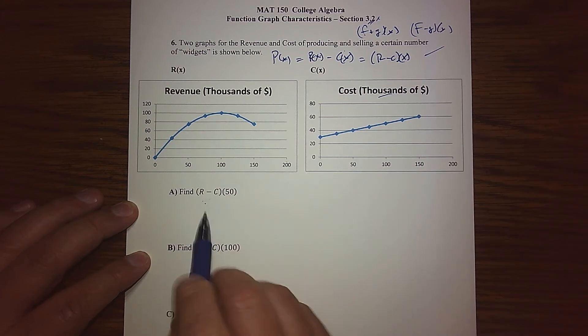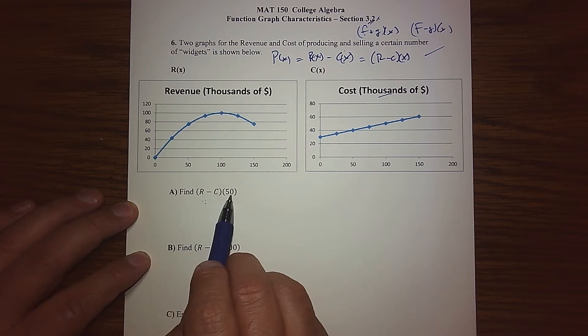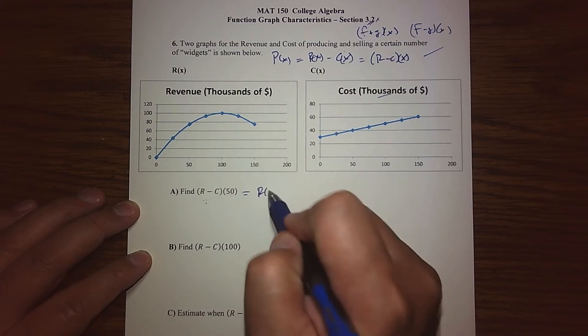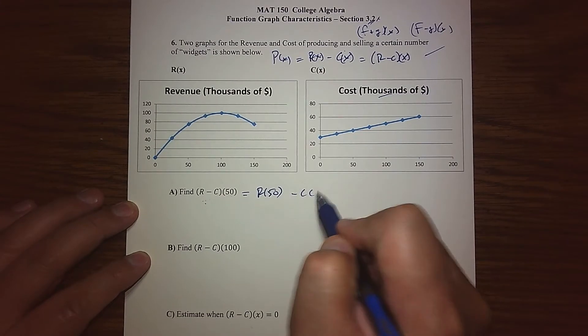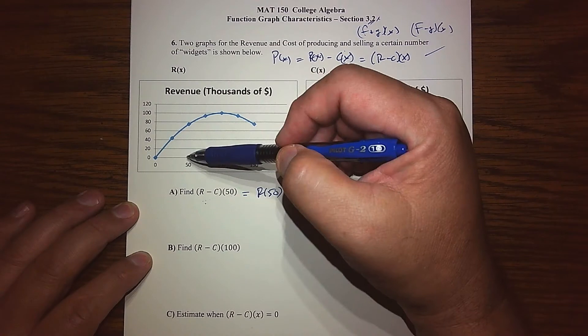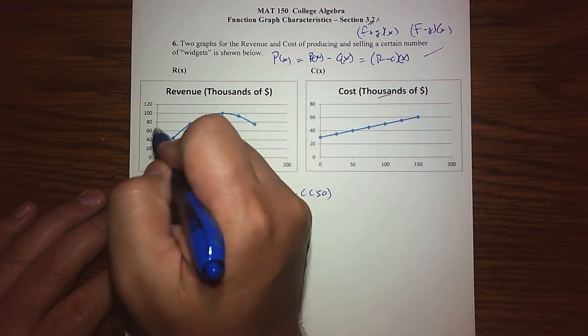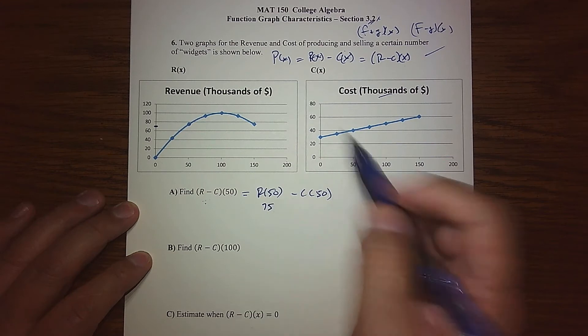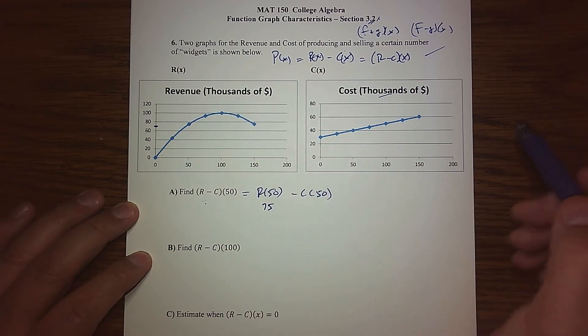I want to know what's my profit function when I sell 50 widgets. We can break this up into R(50) minus C(50) and basically look at their values. What's R(50)? When I look at here, right about here's 70, so let's call that 75, and that's thousands of dollars.